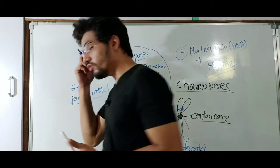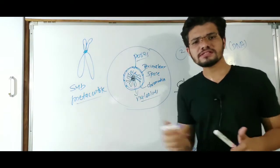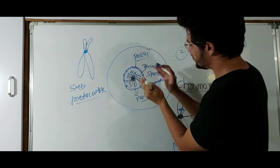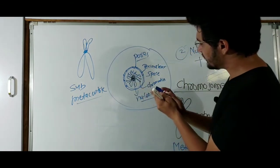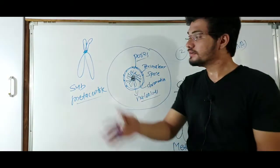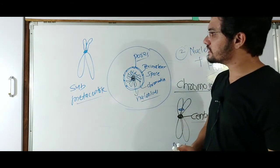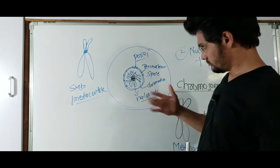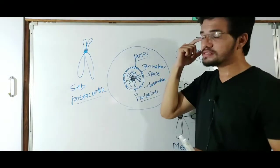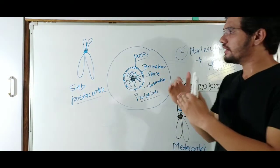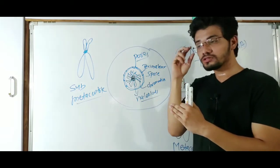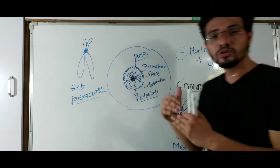Remember: during interphase of the cell cycle, the nucleus will be present and the chromatin material will be visible. During other stages of the cell cycle, chromosomes can be seen. These chromosomes can be of different types such as metacentric and submetacentric.